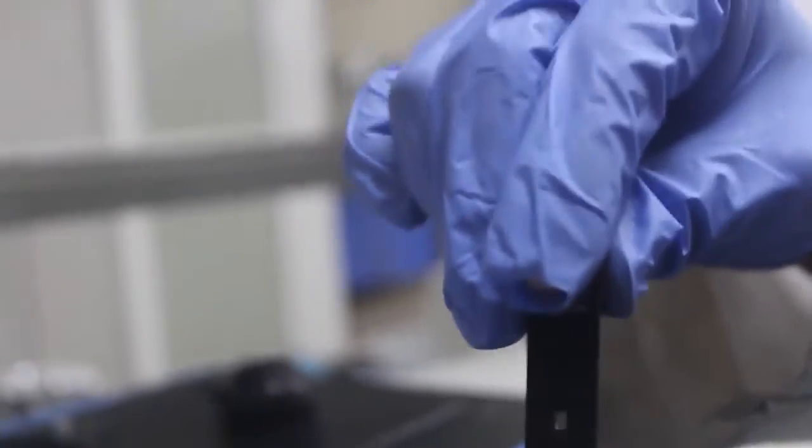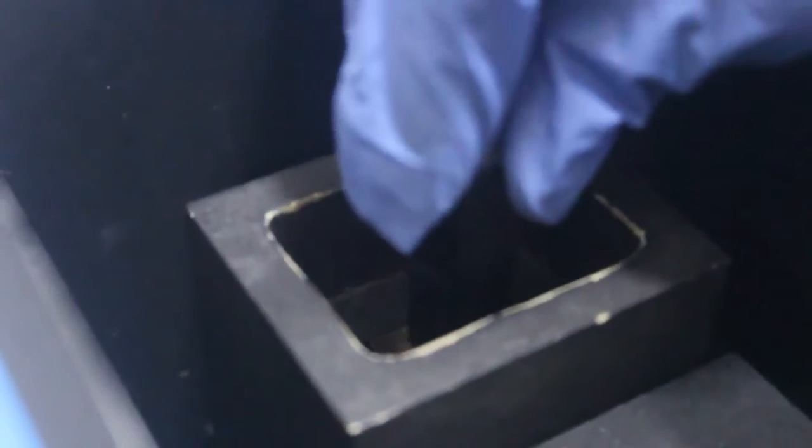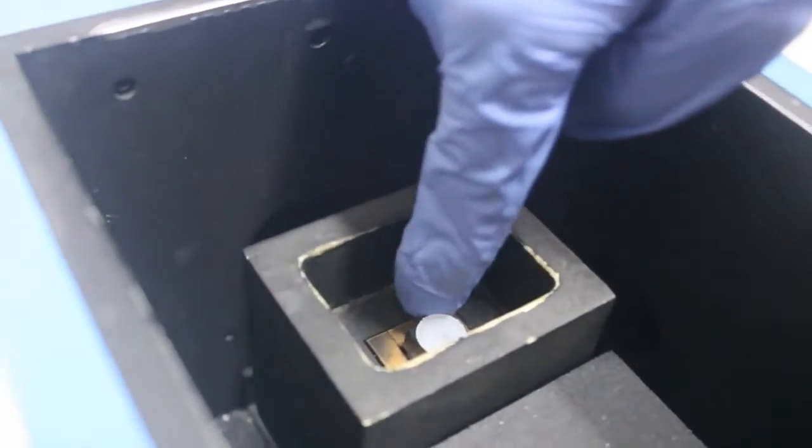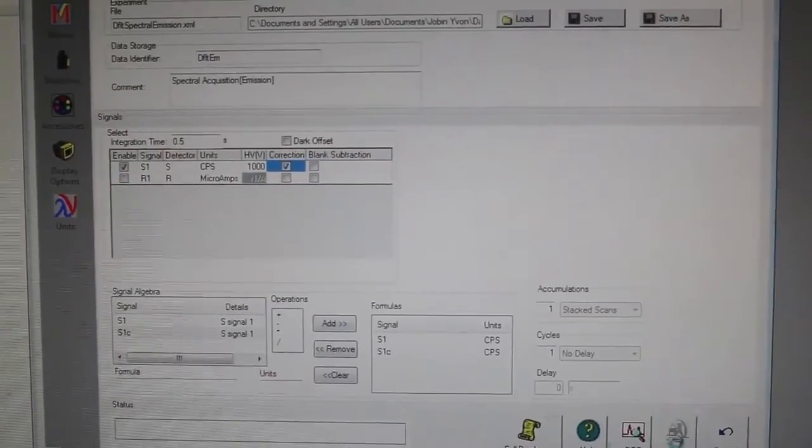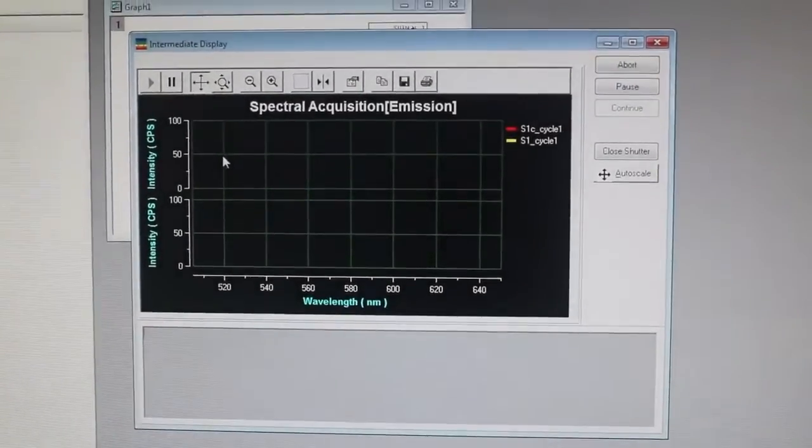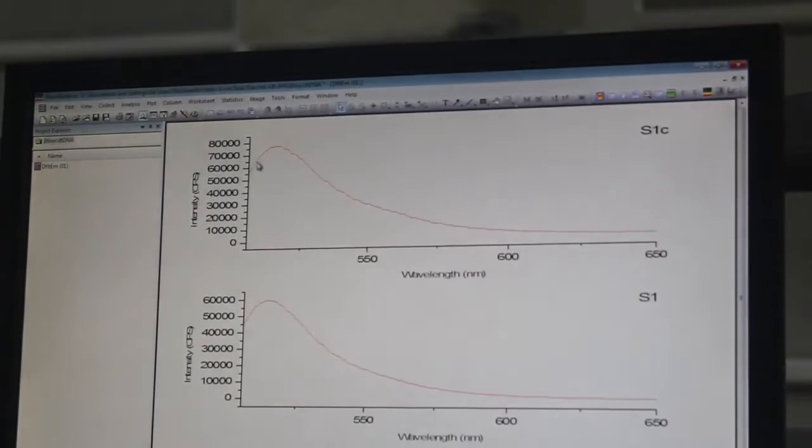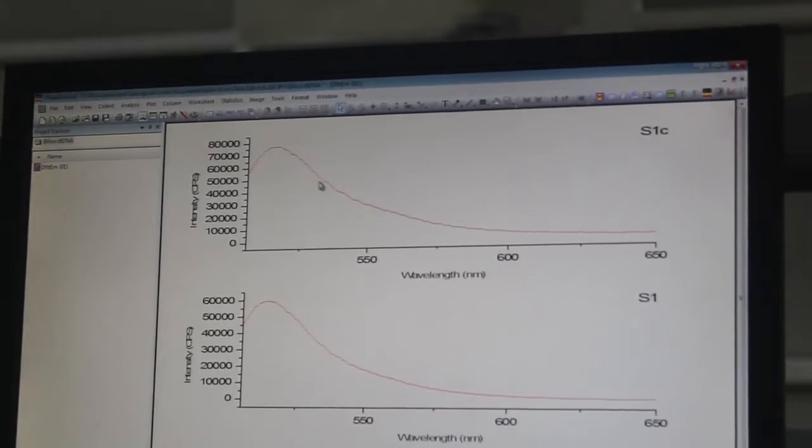Now we're going to put this cuvette along with the sample inside the cuvette holder. Light is coming through this way, emission is collecting through this way, so we have cuvette windows open towards this and this side. We click on this run button—it will start acquiring the spectra. This is the emission profile of our donor light which is attached to the DNA.